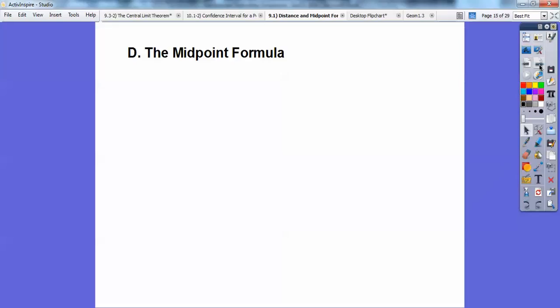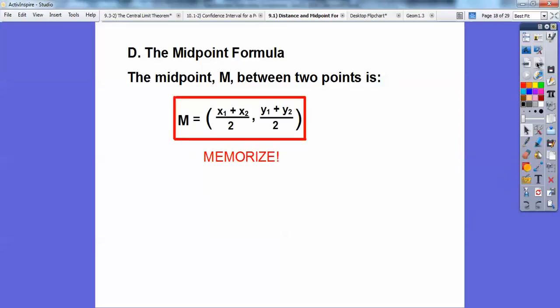Alright, so the midpoint formula, you guys, same thing. It's going between the two points, x1, y1, and x2, y2. I didn't write that down, but your midpoint formula is just the average of your x's and the average of your y's. This one's easier to memorize, but that's another one you want to memorize, you guys.